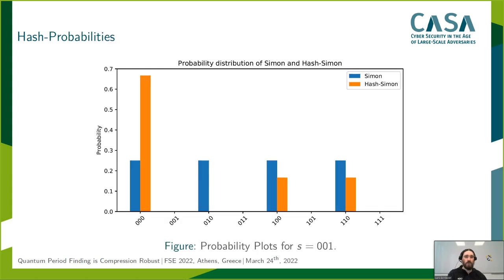Let us consider the distribution of the y's for a fixed hash function compared to the original time distribution. Such a distribution might look like this, for example, for our n=3 and s=001 case. Here we already see the bias towards zero, and also that some y's are no longer measurable.